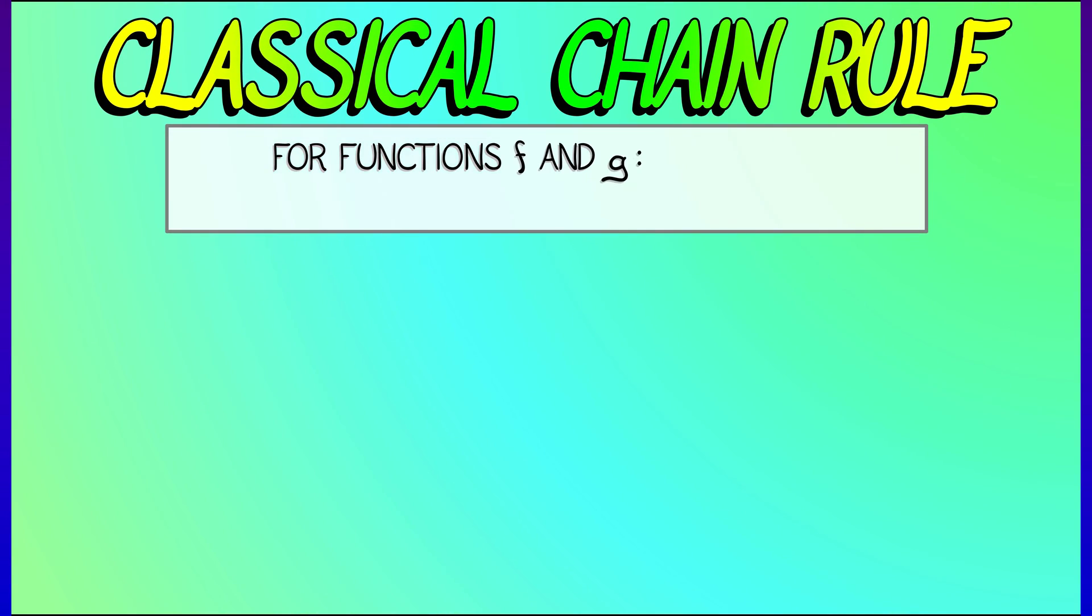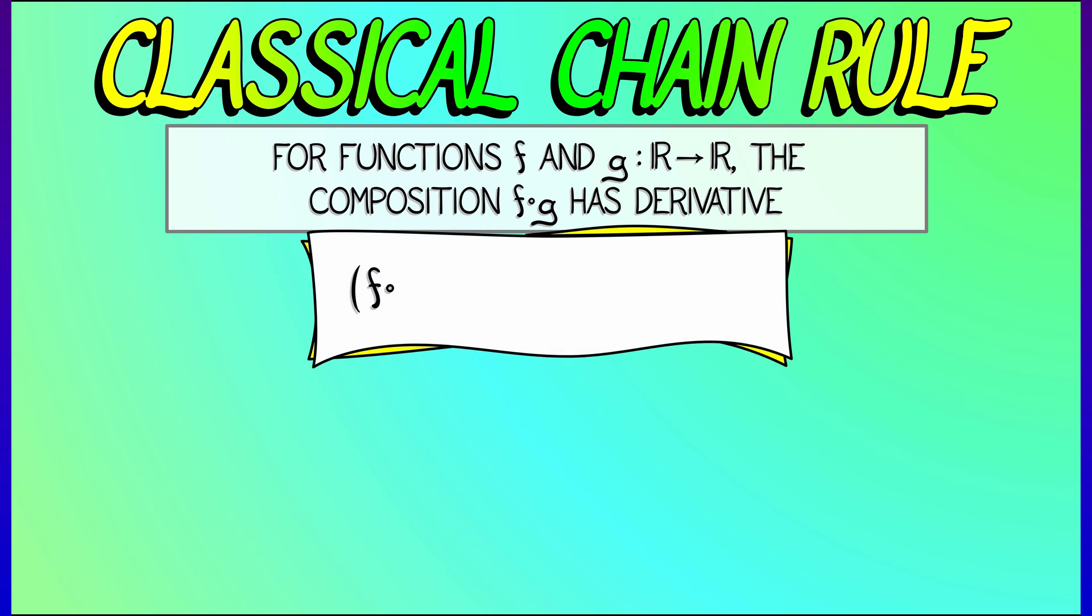Let's go over that classical chain rule. Let's say you've got two functions, f and g. One input, one output, then their composition, f composed with g, and that's what that little circle guy means, it has the following derivative.